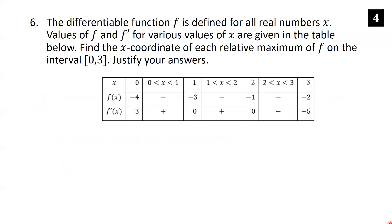Let f be differentiable with values of f and f′ given in a table. Find the x-coordinate of each relative maximum of f on [0, 3]. From the table, the critical numbers are x=1 and x=2, where f′ equals zero. Those are the only candidates for a relative maximum since extrema must occur at critical numbers.